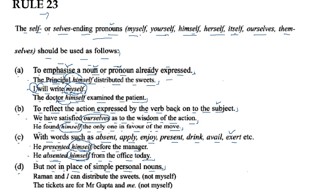For example: 'Raman and I can distribute the sweets' — this is correct. You won't use 'myself' here. 'Raman and I myself can distribute the sweets' is wrong, because Raman and I are simple personal nouns. With simple personal nouns, you do not need to use a reflexive pronoun.